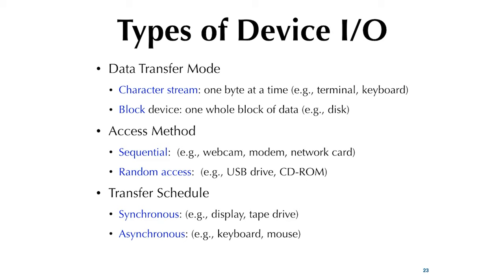Access method may be sequential or random access. Sequential is where data just keeps coming and streaming in — webcam, modem, network card. You handle buffering but it comes in sequentially. Random access is more like a memory device — could be CD-ROM, USB drive, or hard drive.